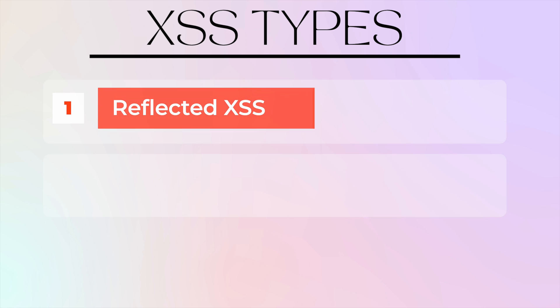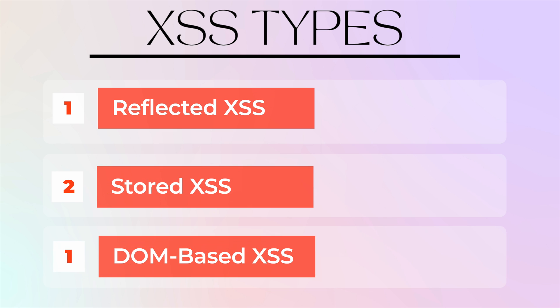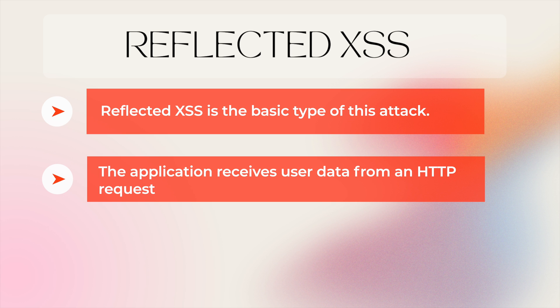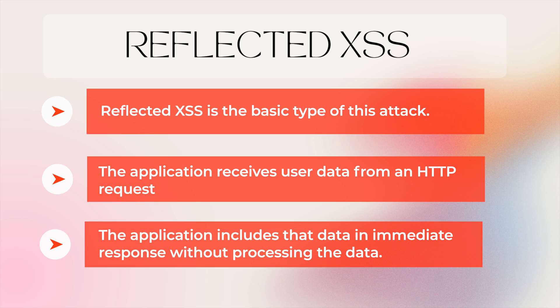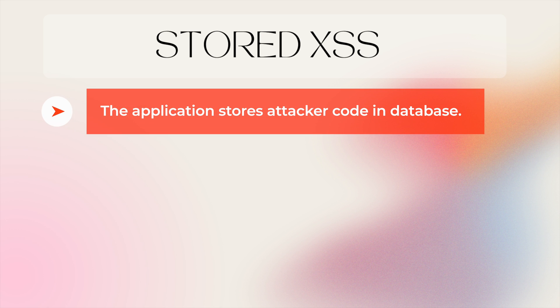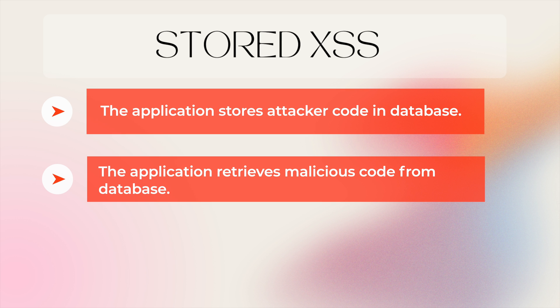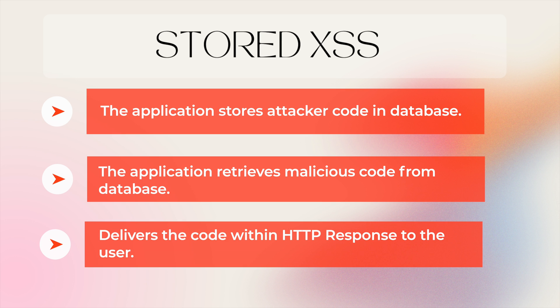There are three main types of cross-site scripting attacks: reflected, stored, and DOM-based cross-site scripting. Reflected XSS is the basic type — the application receives user data containing malicious code from an HTTP request and includes that data in the immediate HTTP response without robust processing. In stored XSS, the application stores the attacker's malicious code in the database, and later when any end user visits the vulnerable page, the application retrieves and delivers that code within the HTTP response to the user browser, where it gets executed within the context of the user session.